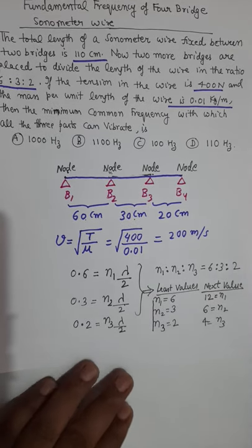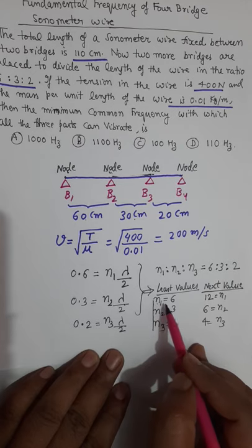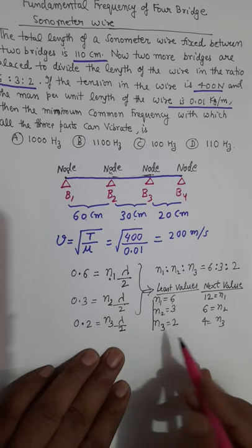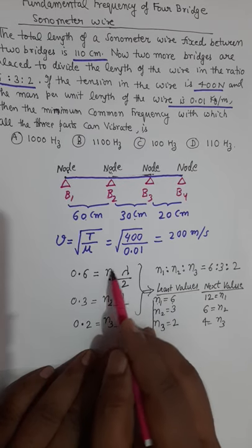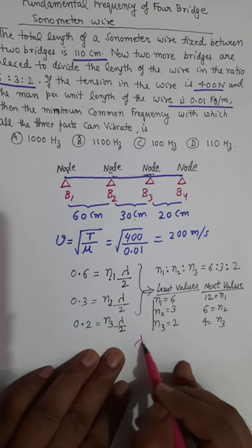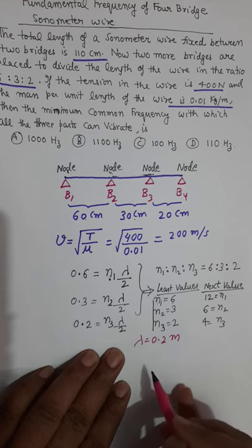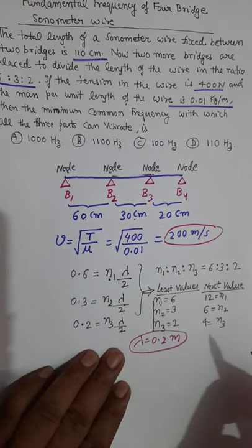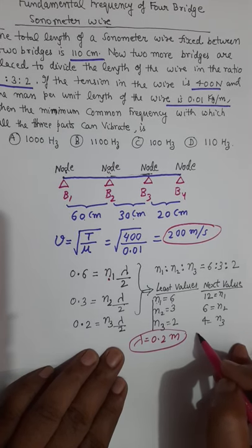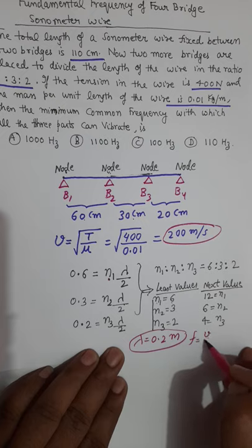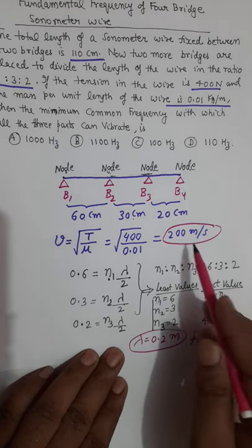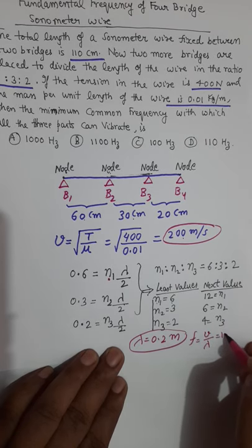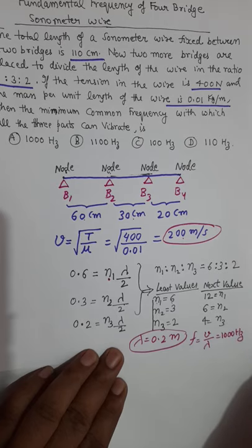Substituting n₁ = 6 into the equation 0.6 = n₁ × (λ/2), we get λ = 0.2 m. With wave speed = 200 m/s and λ = 0.2 m, frequency = speed / wavelength = 200 / 0.2 = 1000 Hz. That is the minimum possible frequency.